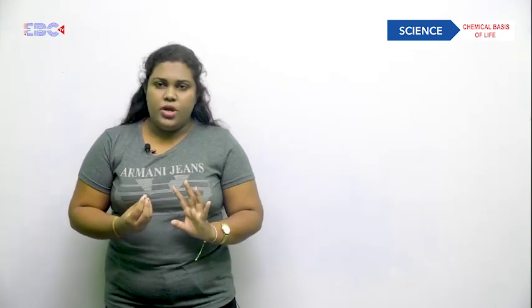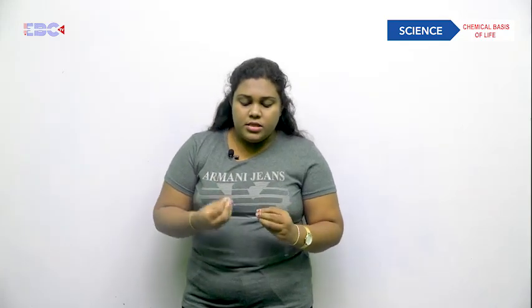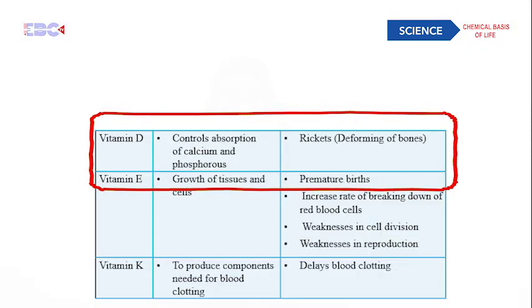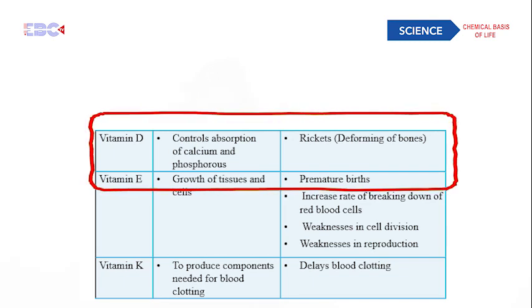Further deficiency symptoms of vitamin C include delayed recovery from disease, and scurvy — another kind of gum disease, shown in the image. Moving on to vitamin D, its major use is to control the absorption of calcium and phosphorus. Deficiency symptoms of vitamin D include tooth decay and osteoporosis.